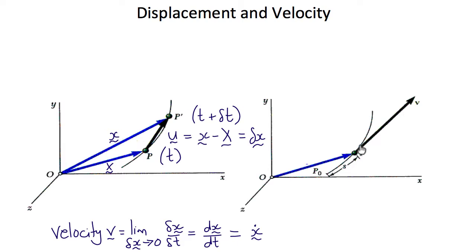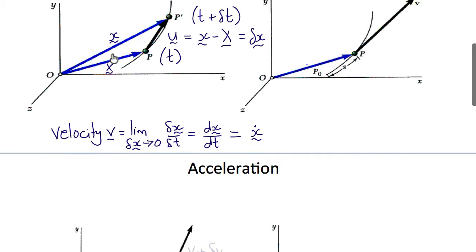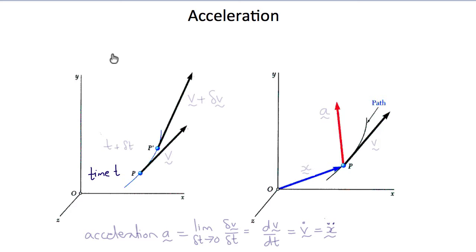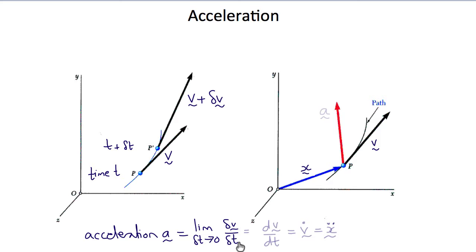The velocity vector is tangent to the arc of the motion at point p at time t. Now we can define acceleration. At time t we have point p, and at time t plus delta-t the particle is at point p-prime. The velocity vector at time t is v and at time t plus delta-t is v plus delta-v. The acceleration is the limit as delta t tends to zero of delta v over delta t, which is dv/dt, or v-dot, or x-double-dot. The acceleration vector has components tangent to the motion and normal to the motion.